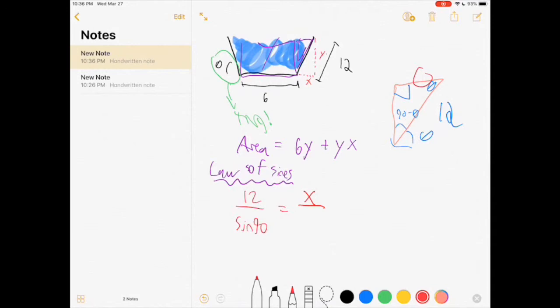x over sine 90 minus theta, which is equal to our y component. y over theta, we have set up our equations from here.